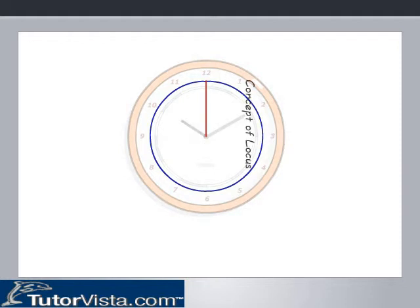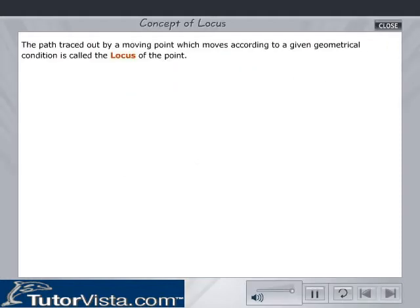Concept of Locus. The path traced out by a moving point which moves according to a given geometrical condition is called the locus of the point.